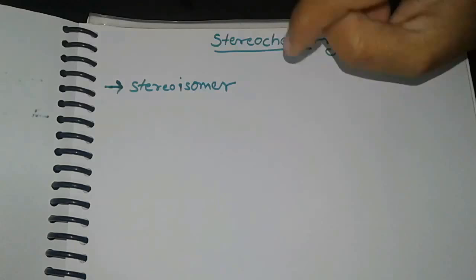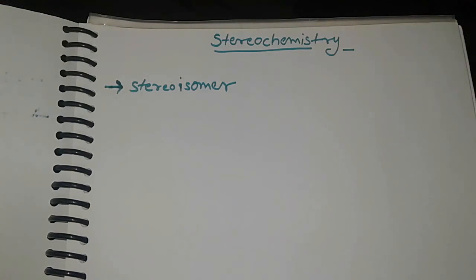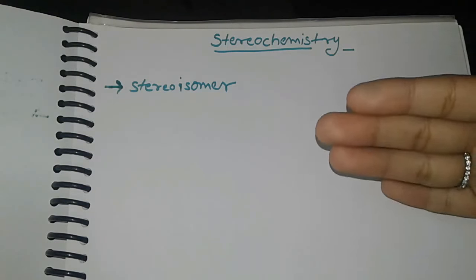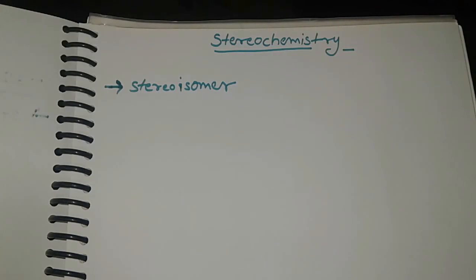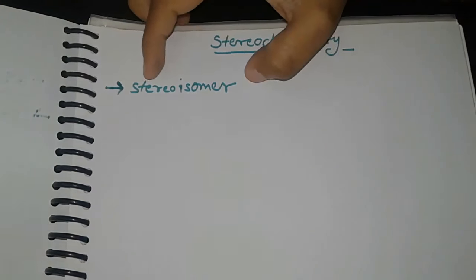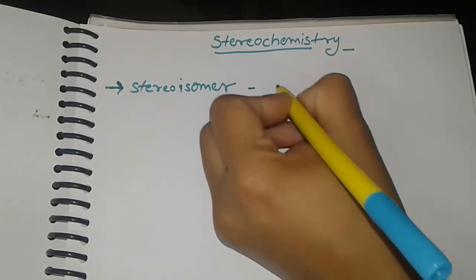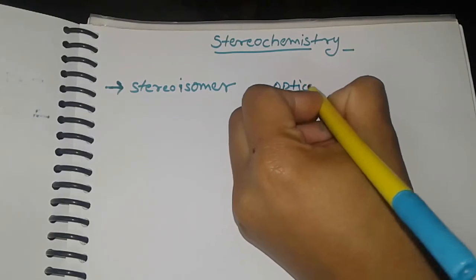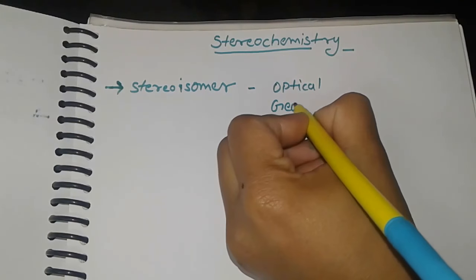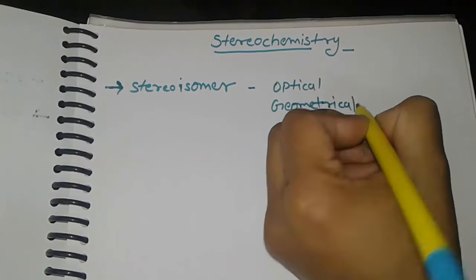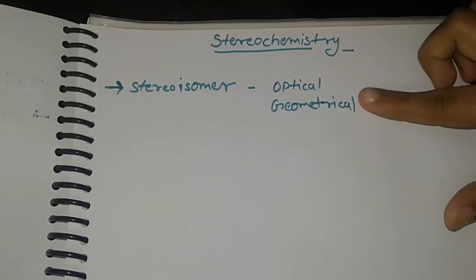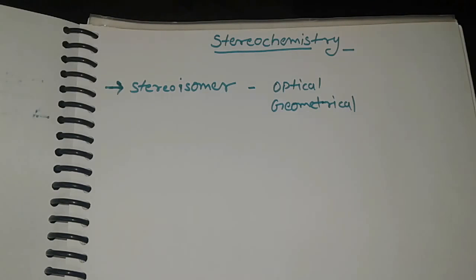Stereochemistry isomers are isomers which have different rearrangement of atoms in a molecule. Stereochemistry isomers are of two types: optical and geometrical. The optical stereochemistry isomers show optical activity.